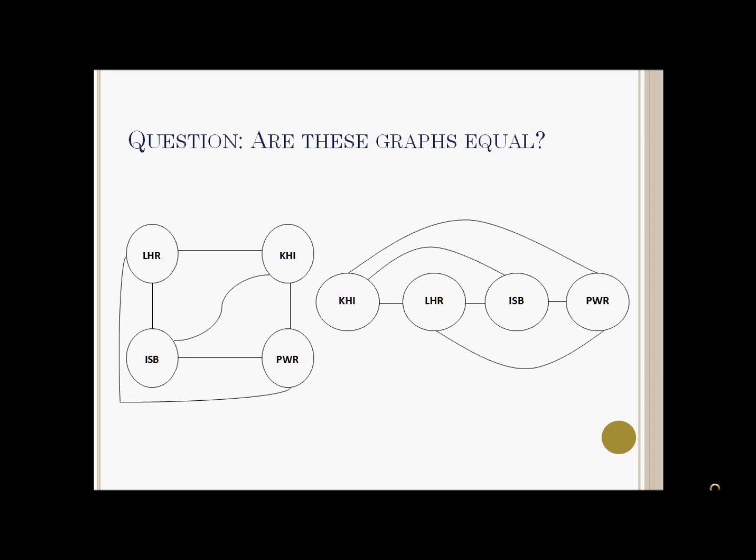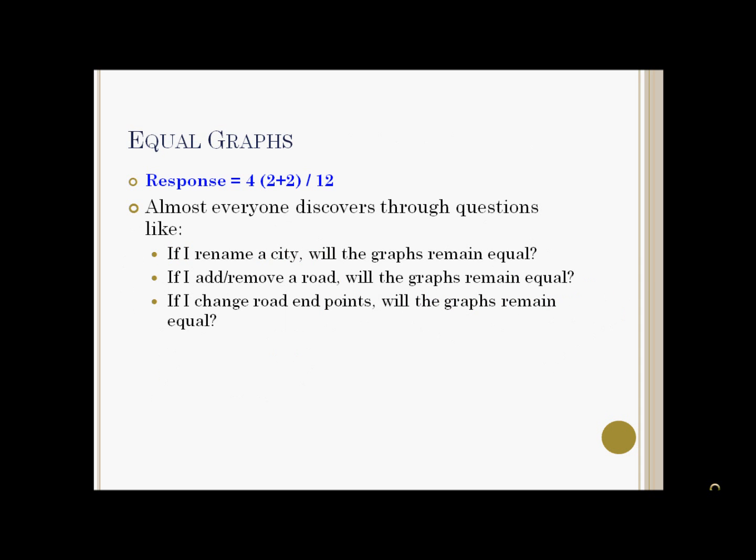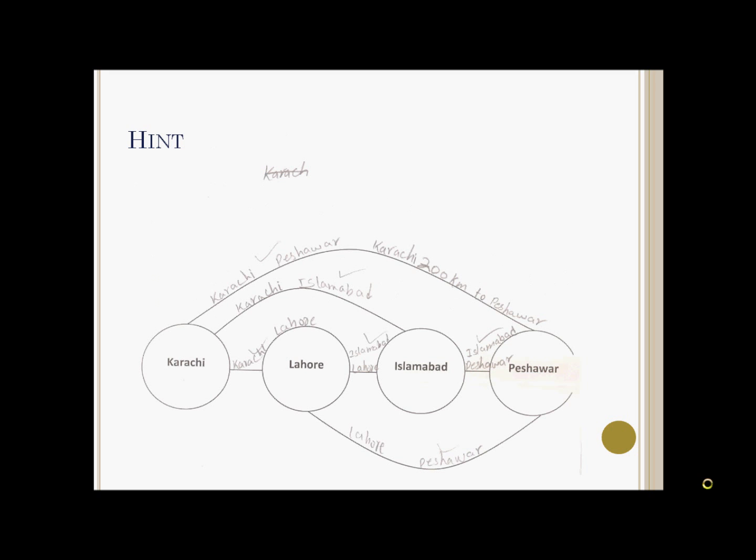We then presented the students with two equal graphs and asked them if they were equal. Although some students got confused and tried to use the concept of degree, all of them understood the necessary and sufficient conditions for equality after being introduced to questions like: if I rename a city, will the graphs remain equal? If I add or remove a road, will the graphs remain equal? If I change the road endpoints, will the graph remain equal? Students also had a problem keeping track of which vertex or edge in graph 1 matches to which vertex or edge in graph 2, so they were asked to use edge labeling.